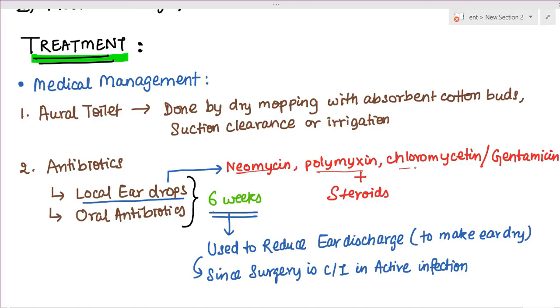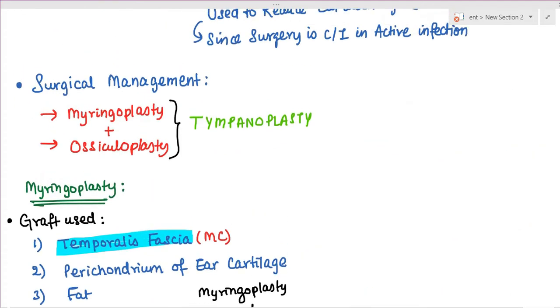We can give antibiotics like local ear drops containing neomycin, polymyxin, chloramphenicol, or gentamicin plus steroids which have local anti-inflammatory and suppressant properties. We can also give oral antibiotics in acute cases. We give them for at least six weeks to reduce ear discharge and make the ear dry, because surgery is not feasible when there is active infection or discharge.